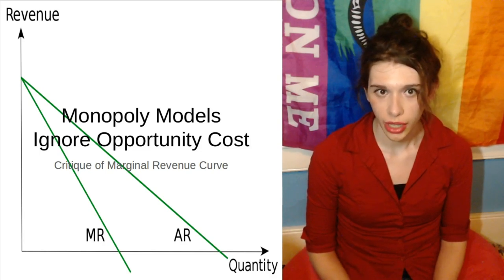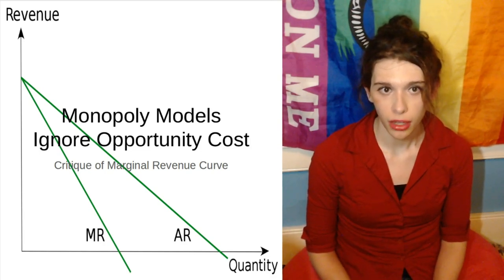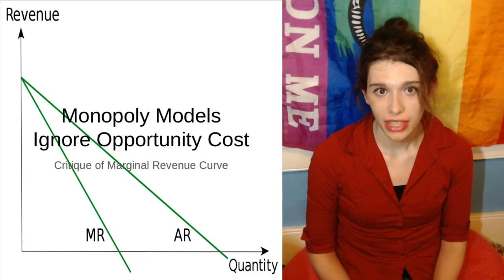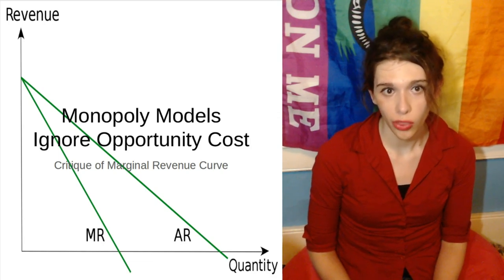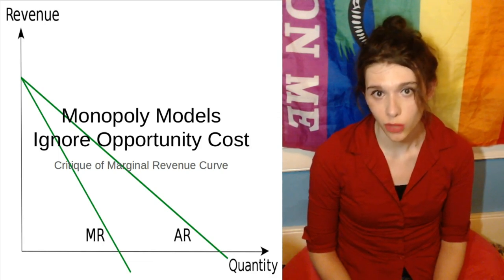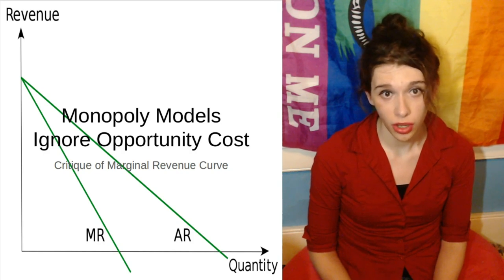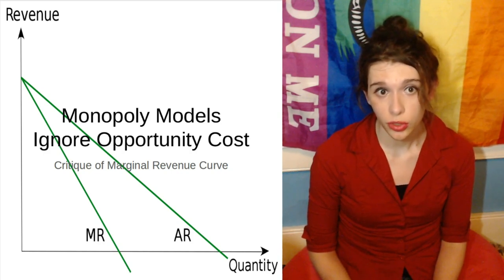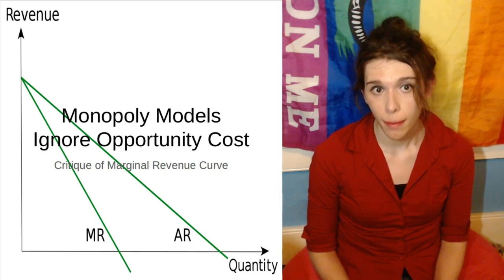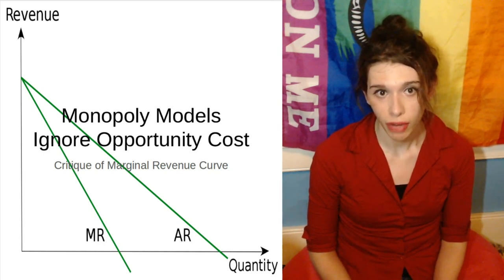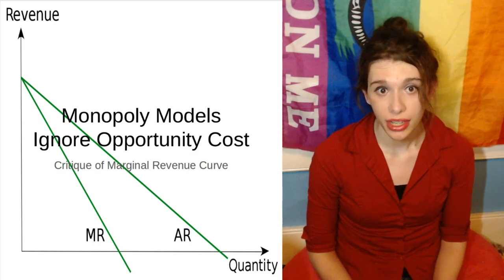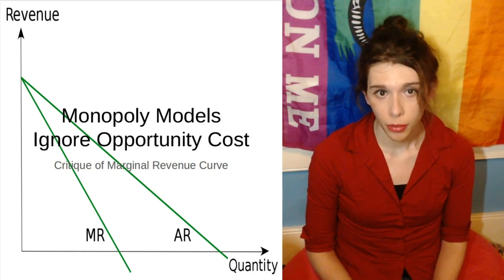In the last video on economics, we explored a basic model of monopoly. It is based upon this idea that instead of producing while the willingness to pay of the marginal consumer is greater than your marginal cost to produce, you can produce until your marginal revenue is greater than your marginal cost. It is about maximizing profits, not finding a competitive price. This only applies if you are a price taker, not a price maker, such as a monopolist. Price makers have a curve representing their marginal revenue.